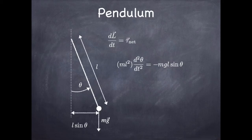If you work it out, the weight produces a torque MgL sinθ in the opposite direction of the angle. So the rate of change of the angular momentum is the rotational inertia times the angular acceleration, and you get an equation of motion.